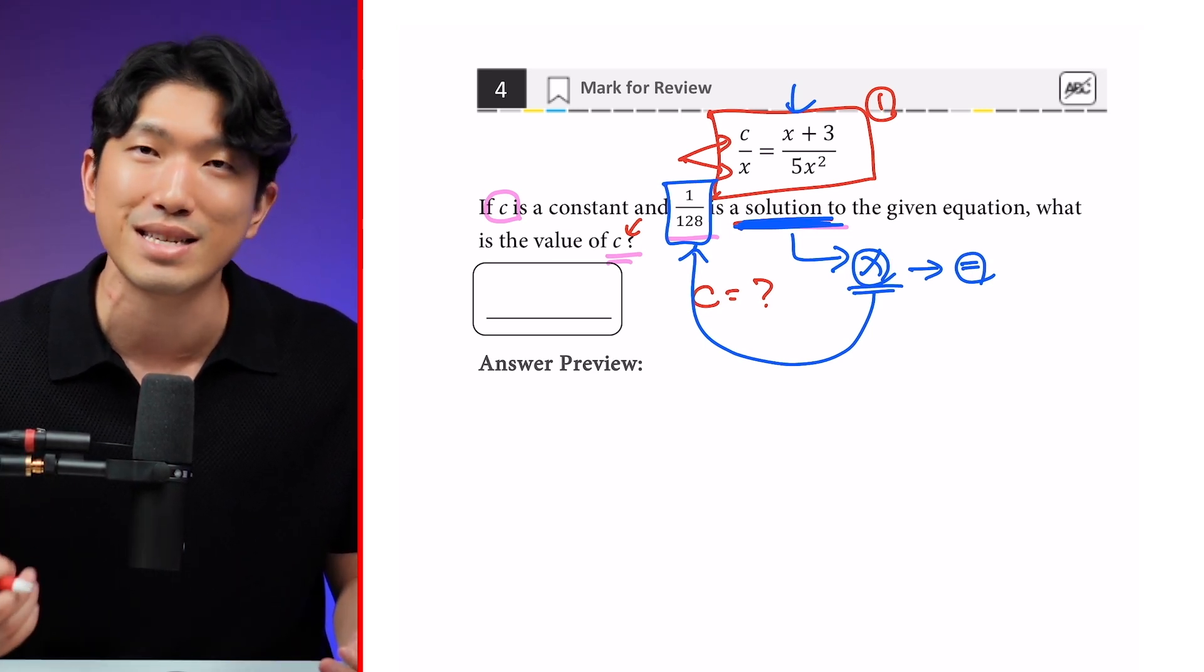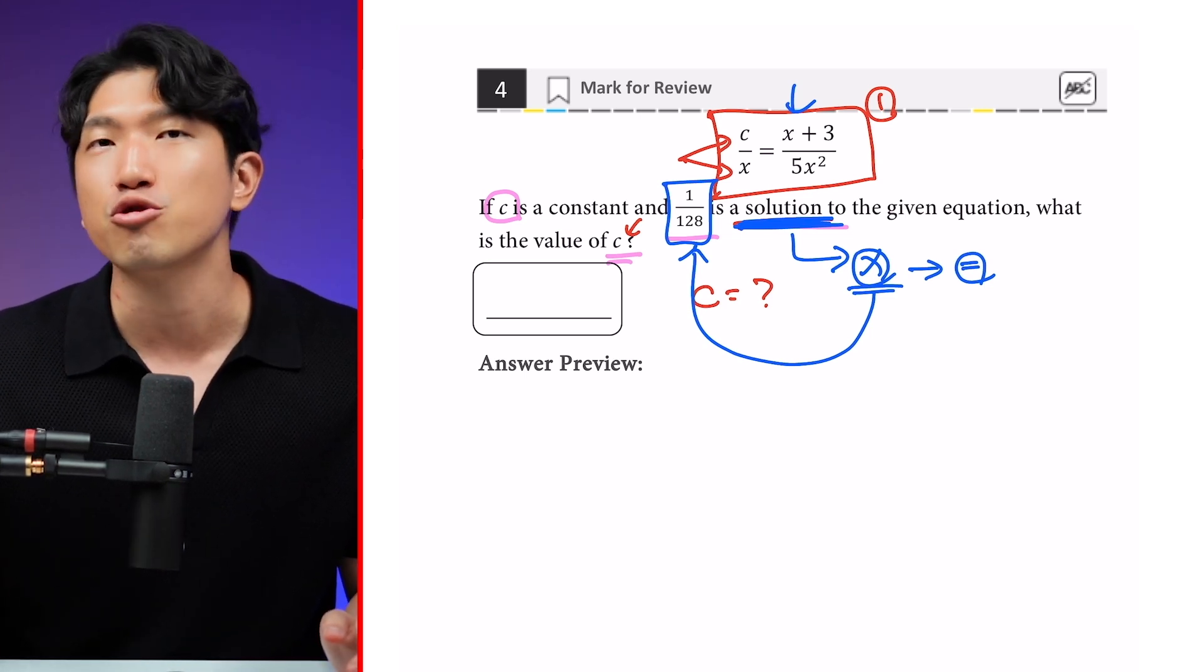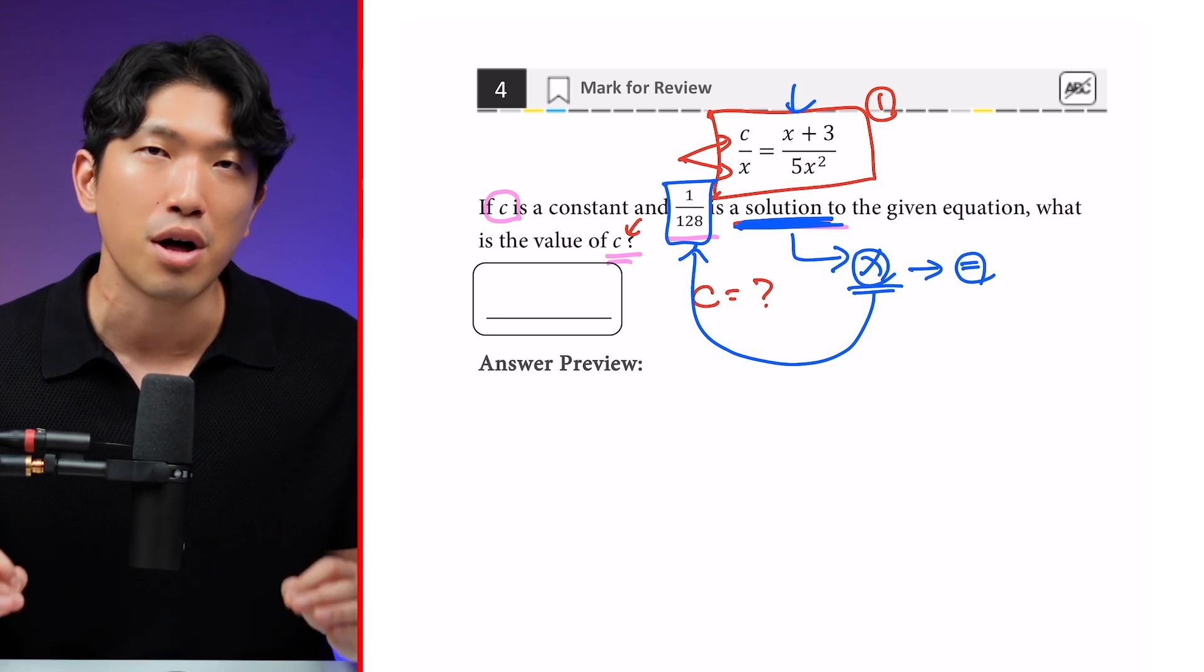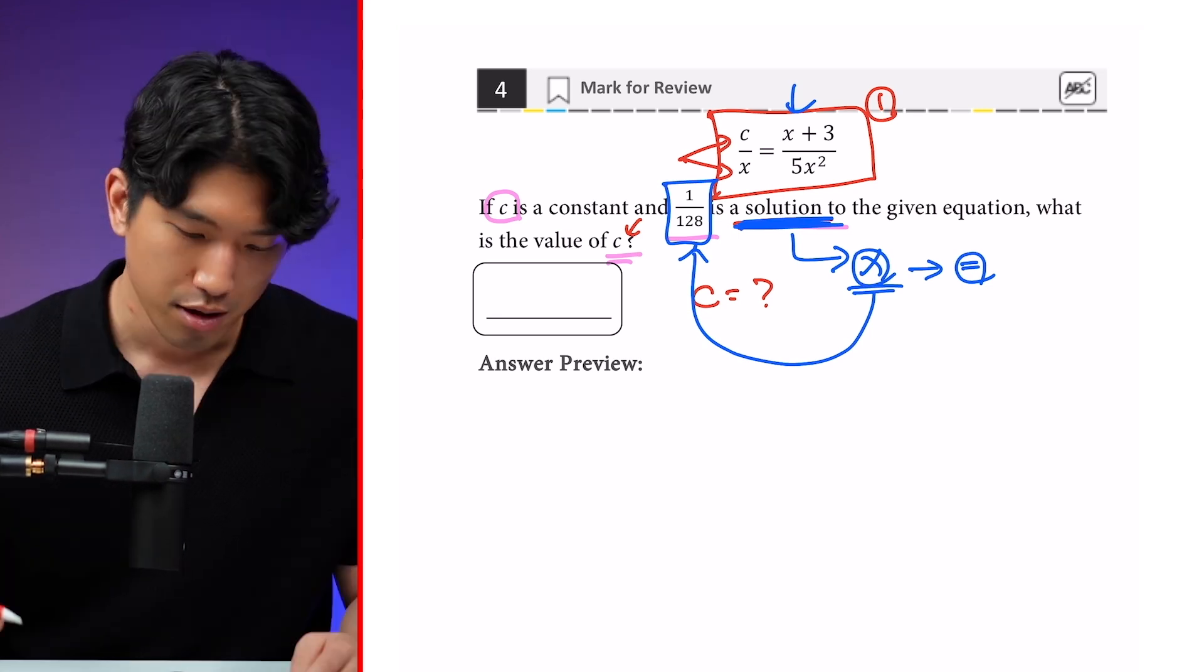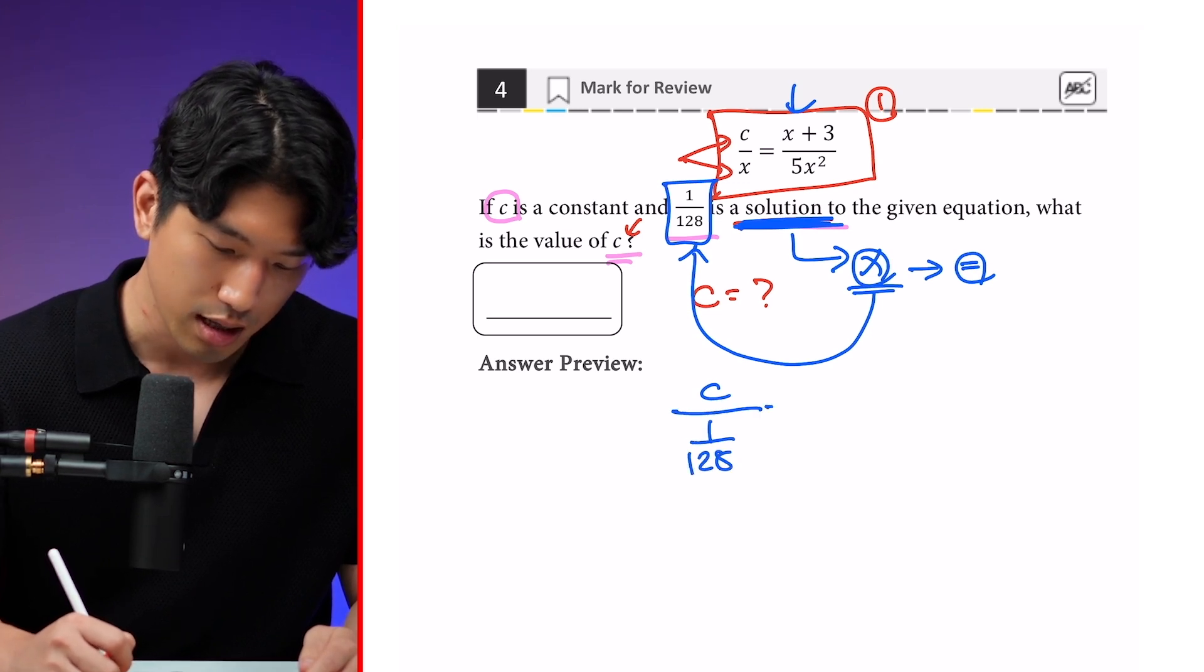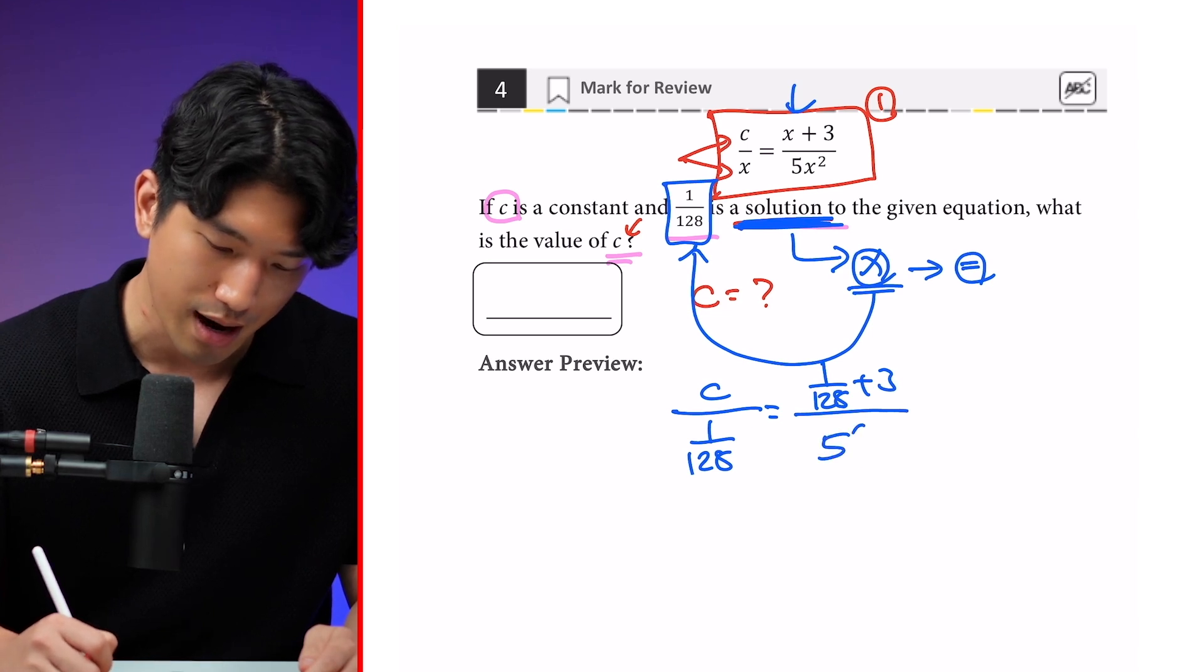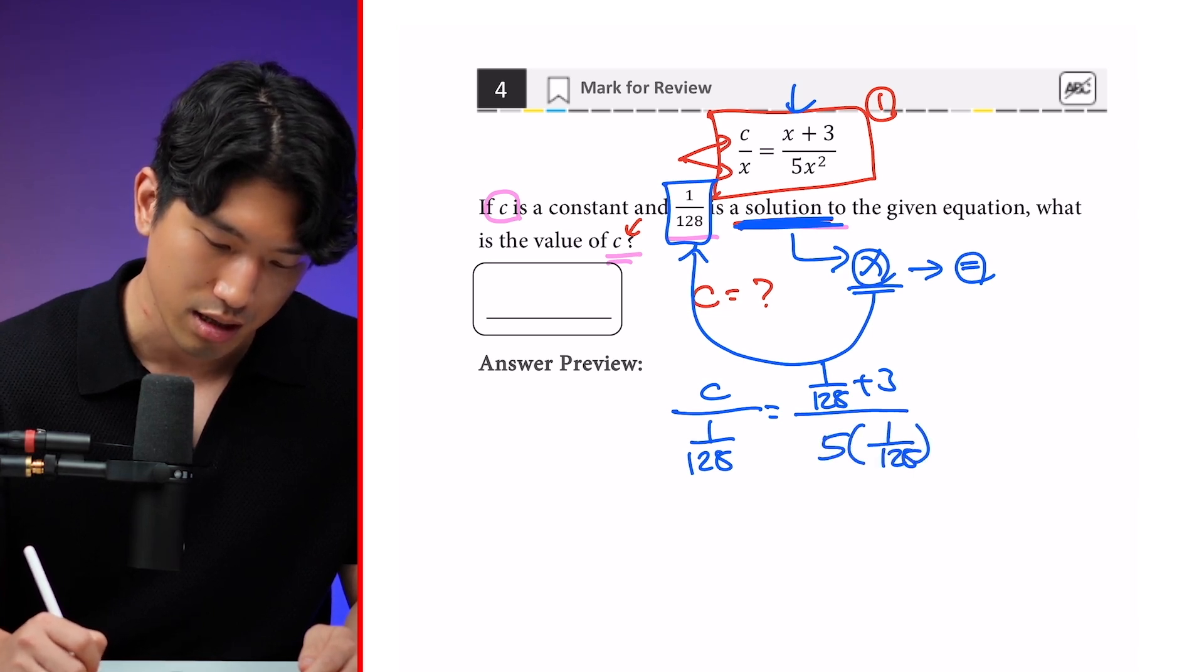Which means we can plug in 1/128 as the value of x. Why? Because it is a solution. It will make the equation true. Because that will make the equation true, it gives us the permission to plug in that value for x. So if we put it in, we're going to get c/(1/128) = (1/128 + 3) / (5(1/128)²).